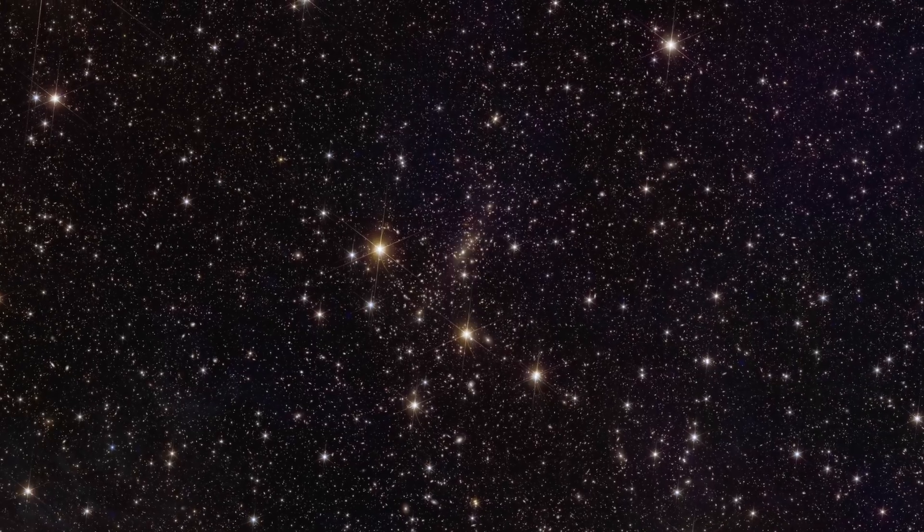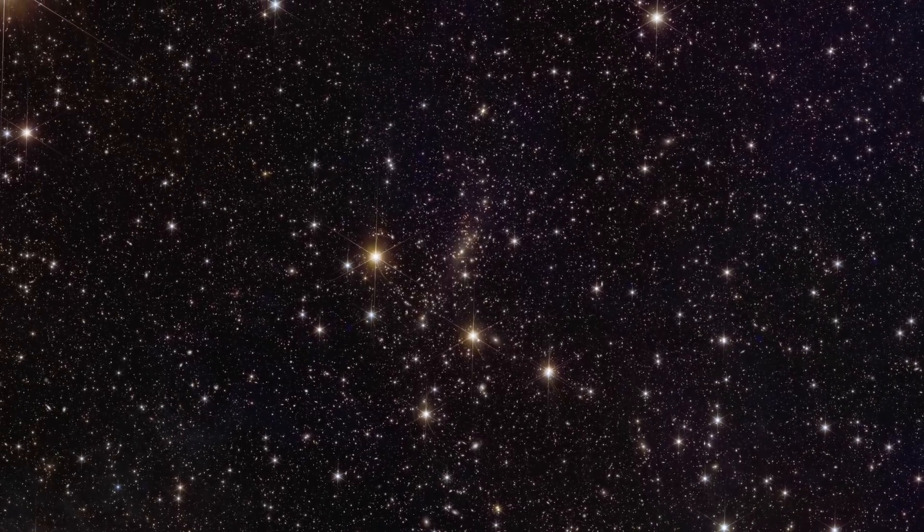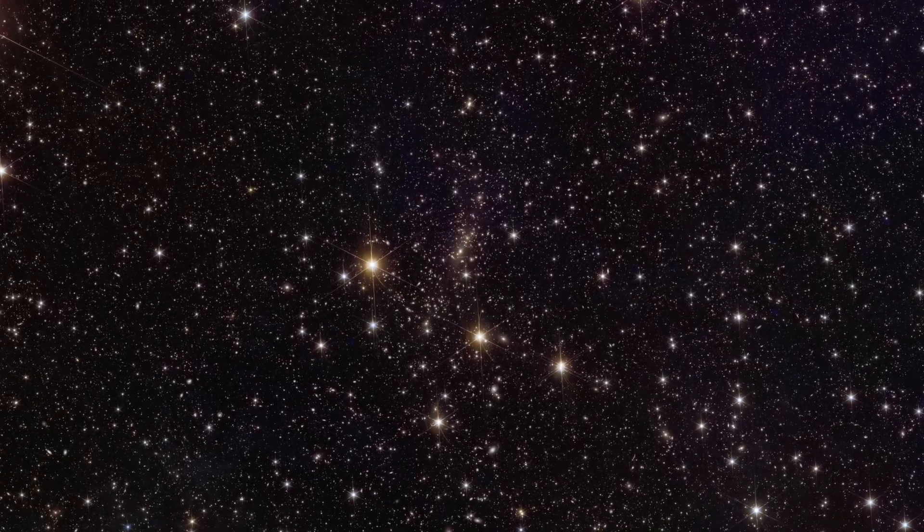First up is ABEL 2390. ABEL 2390 is a massive galaxy cluster located about 2.7 billion light-years away from Earth in the constellation of Pegasus. With more than 50,000 galaxies bound by gravity, it's a huge reservoir of dark matter, and it acts as a giant magnifying glass on the even deeper universe.